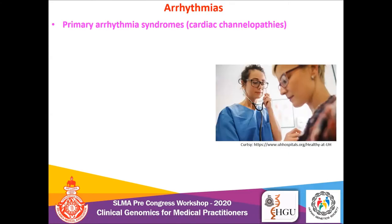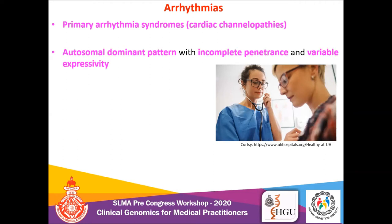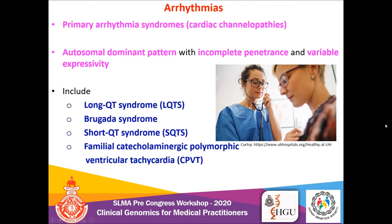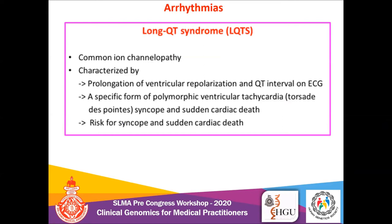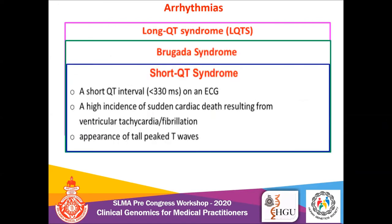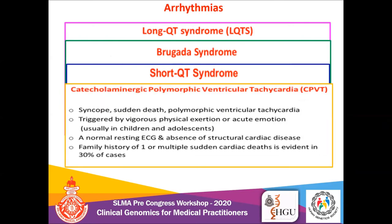Moving on to arrhythmias: primary arrhythmia syndromes are a group of genetically and clinically heterogeneous, inheritable arrhythmic disorders. The majority follow the autosomal dominant pattern with incomplete penetrance and variable expressivity. Common types include Long QT syndrome, Brugada syndrome, Short QT syndrome, and CPVT. An outline of the important features of each type is shown on this slide.